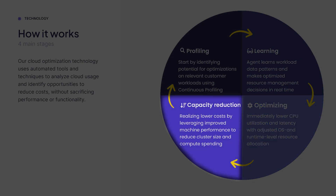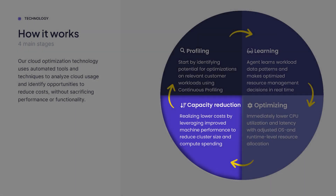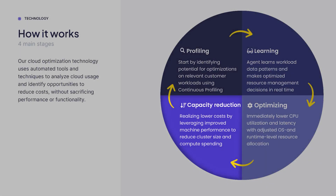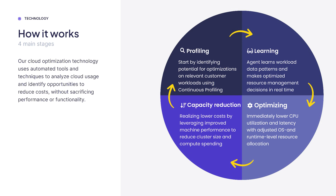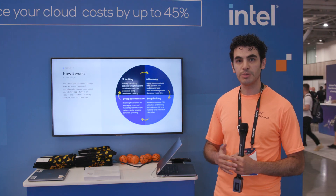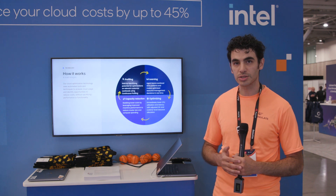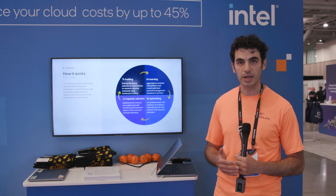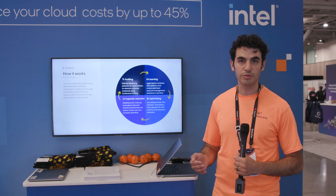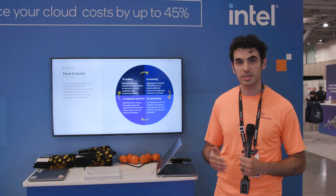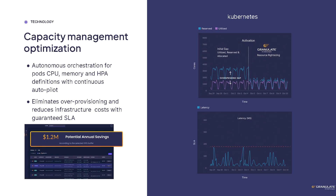Going from performance improvement to cost reduction and capacity management really depends on your architecture. If you are auto-scaling, you'll automatically realize the cost reduction because you will simply not hit your scale-out thresholds nearly as often. If you're not auto-scaling, then there may be an additional step to resize the cluster or the environment so that you're reducing your cost footprint in addition to reducing your CPU utilization.